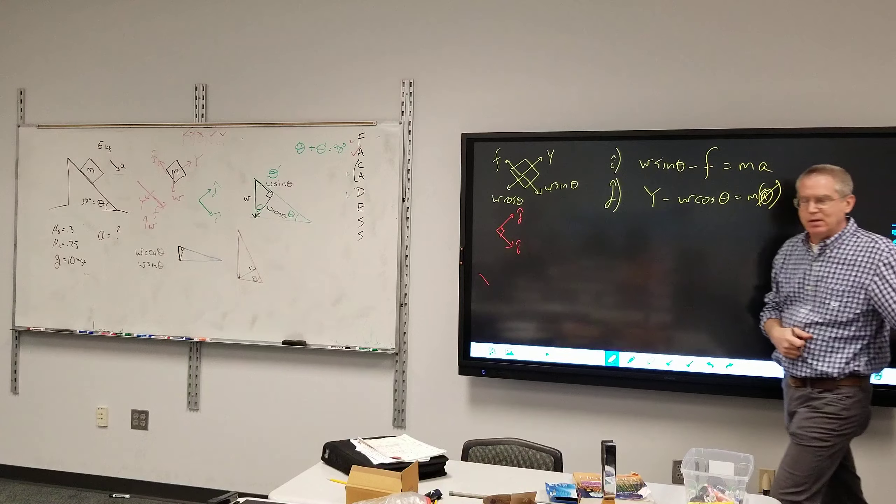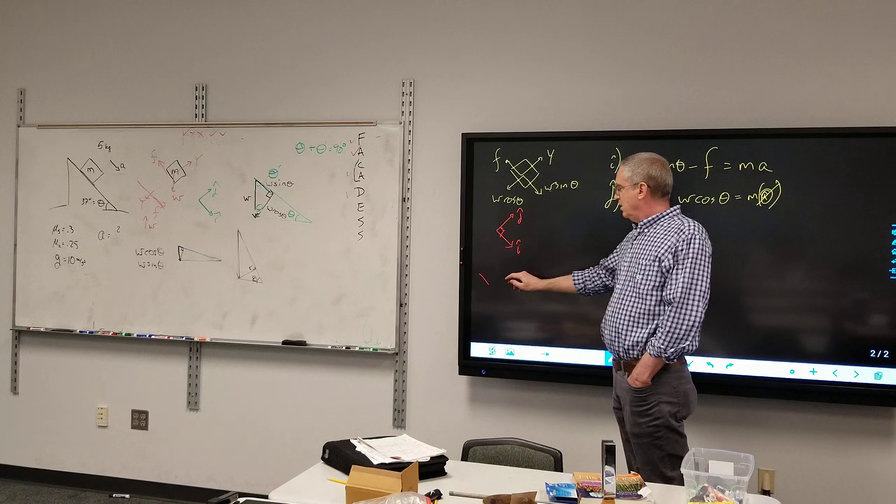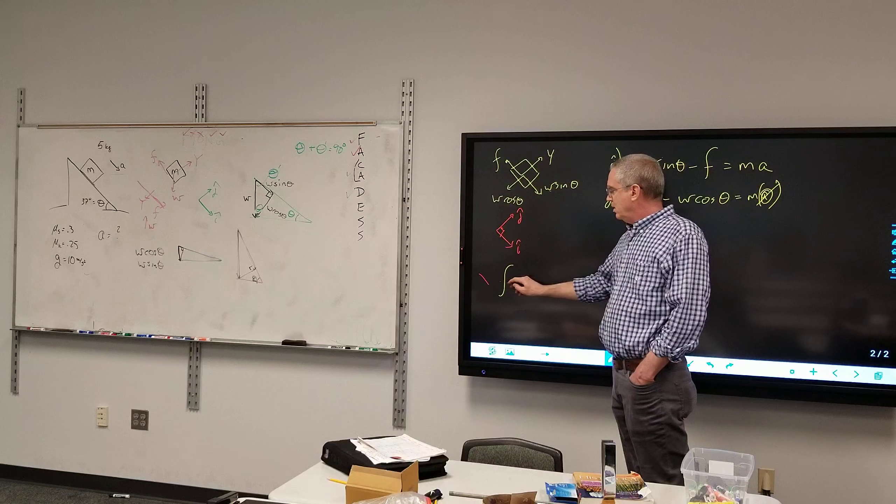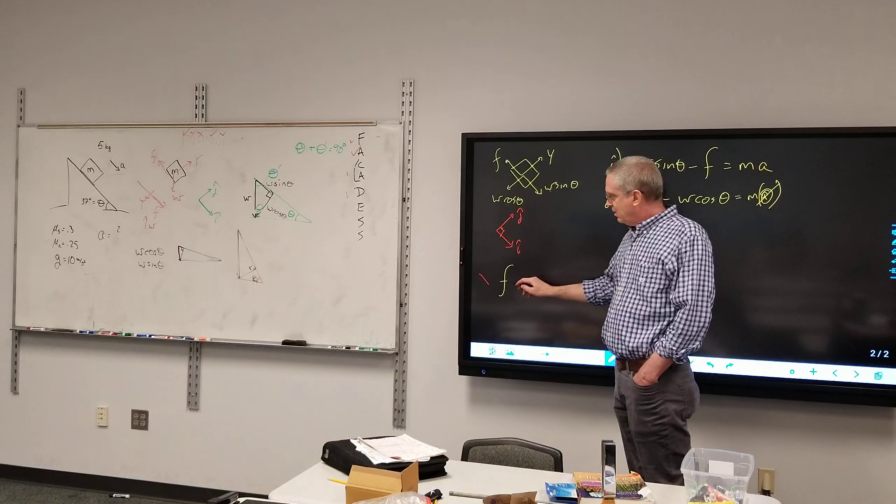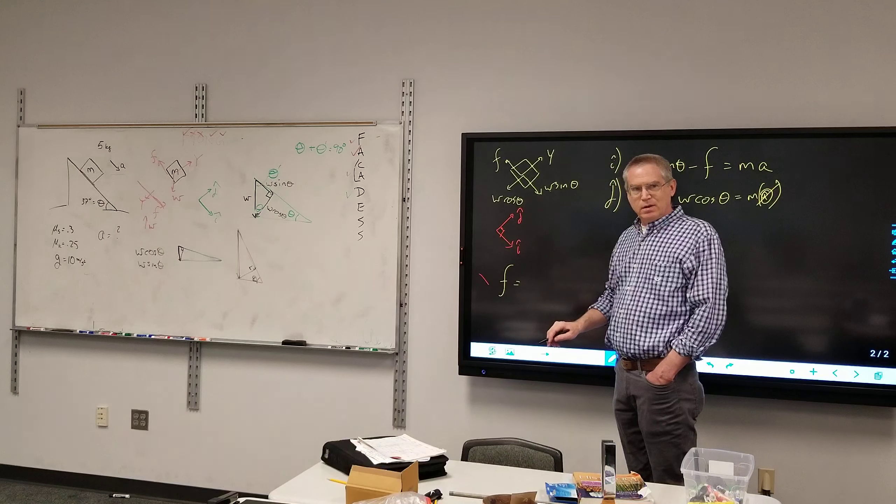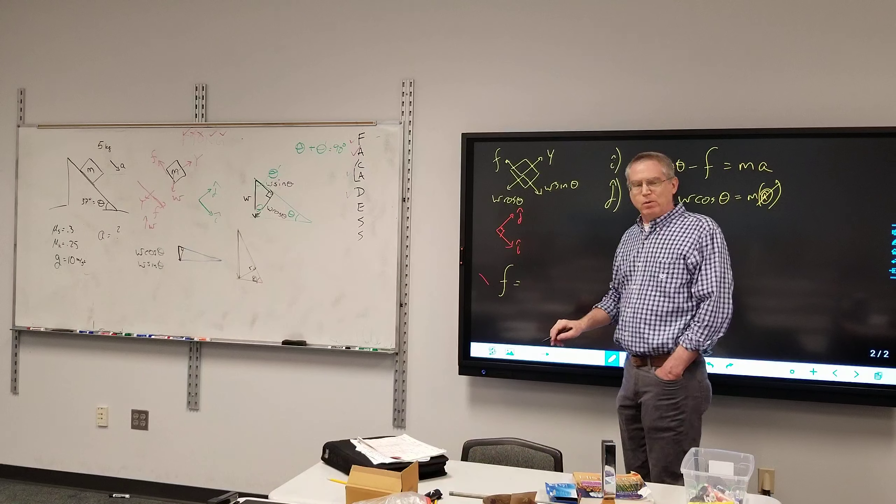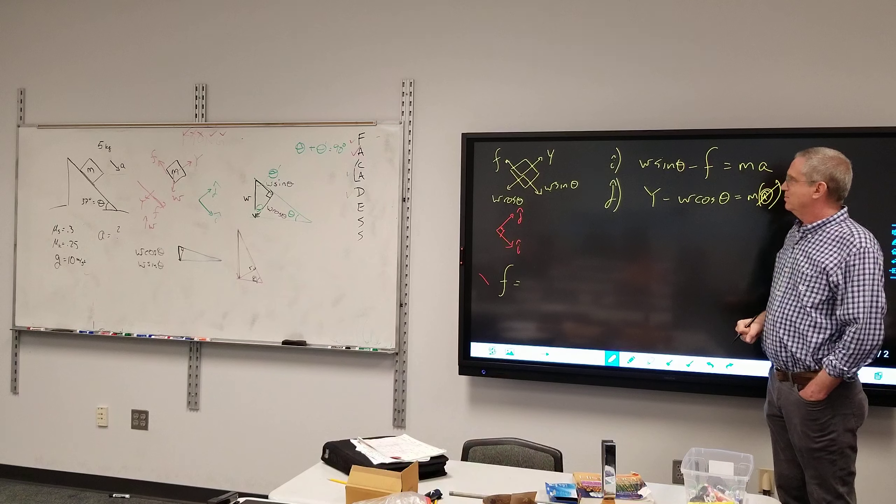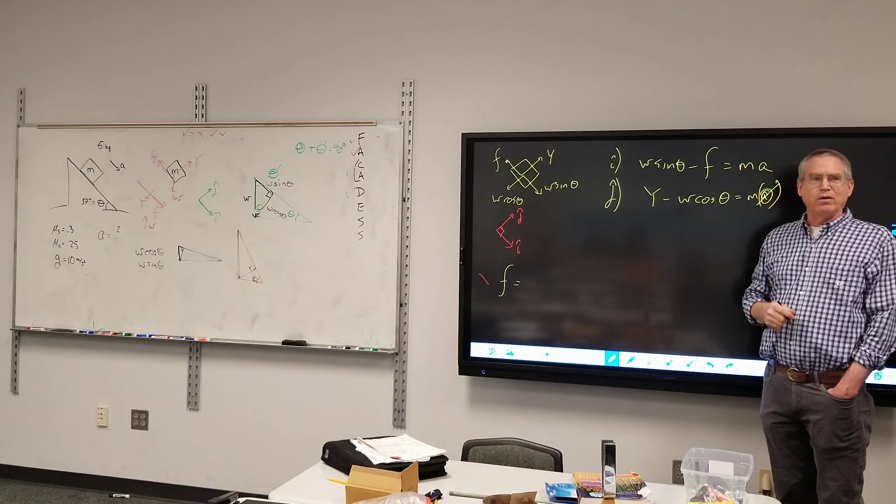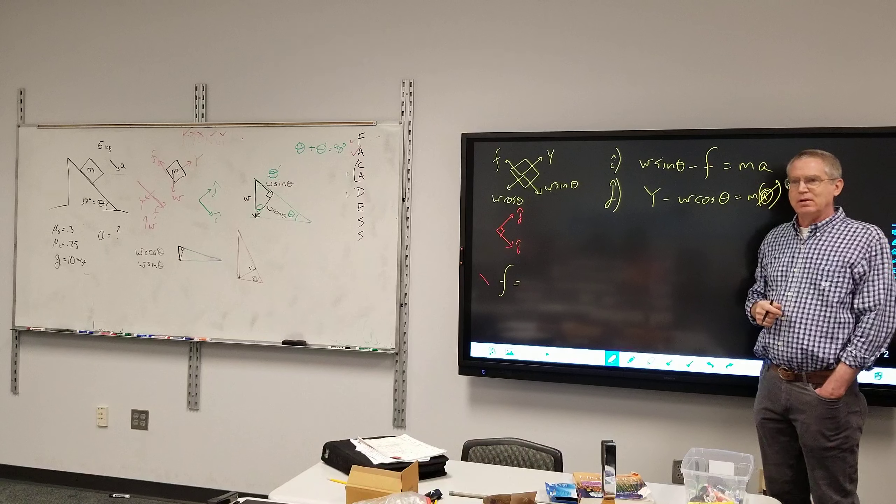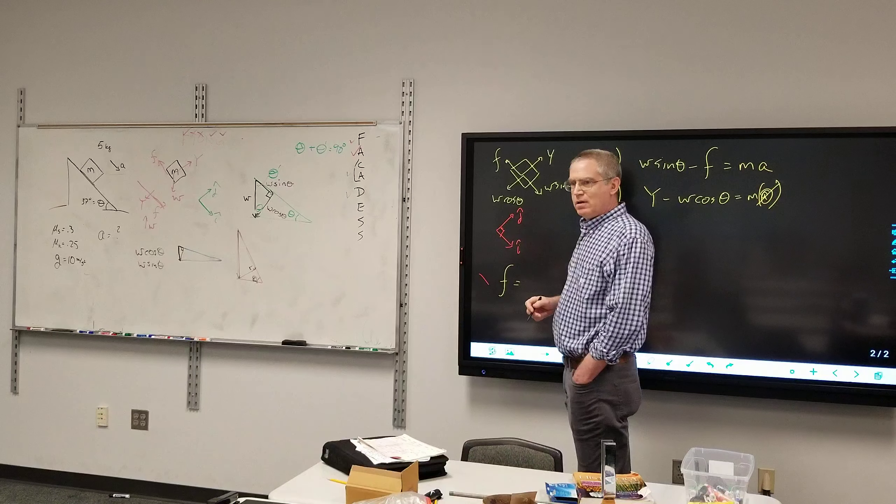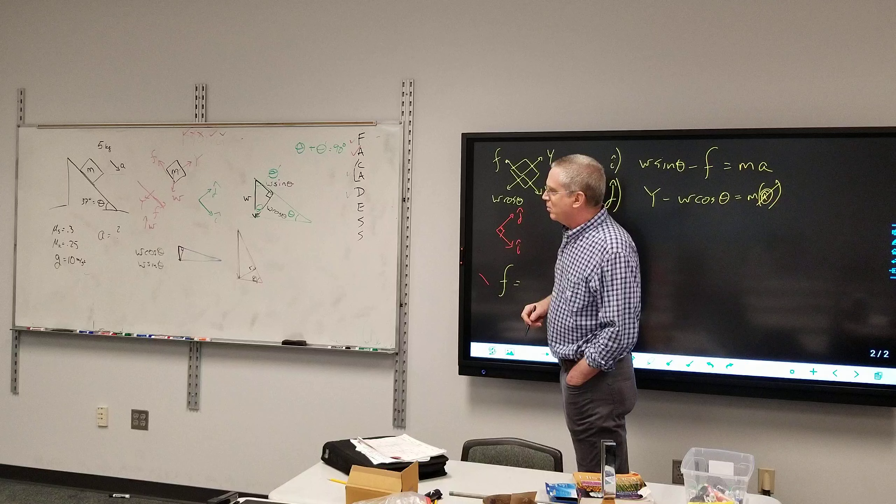It would just be F equals M times the acceleration. Oh, well, we've already used that one. That's how we got this far. Is it the mu S, mu K? The mu's? Yeah.